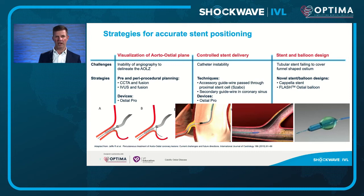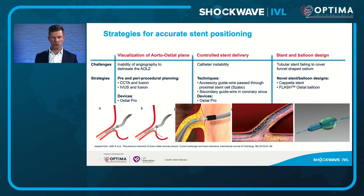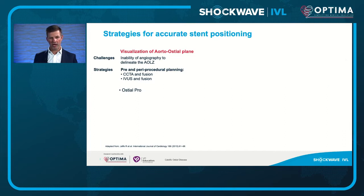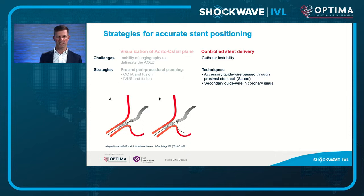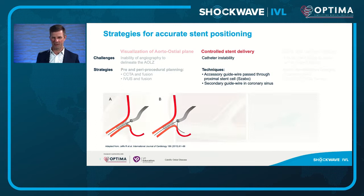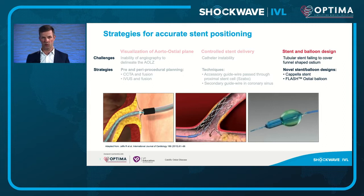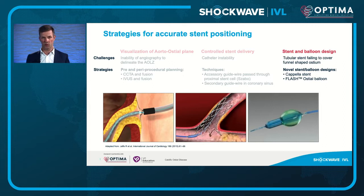Strategies to improve accuracy of stent positioning include CT or IVUS fusion during a case, or devices such as OsteoPro to help visualize the aorto-osteal plane. Techniques like the Zabo wire — putting a wire behind a stent cell or taking a secondary wire into the coronary sinus — can help, as can novel designs like the Capella stent allowing ostial flaring, or the Flash OsteoBloom system which expands a normal stent with a unique design.